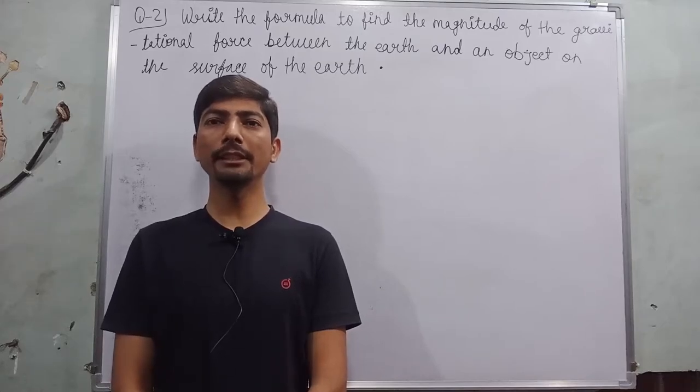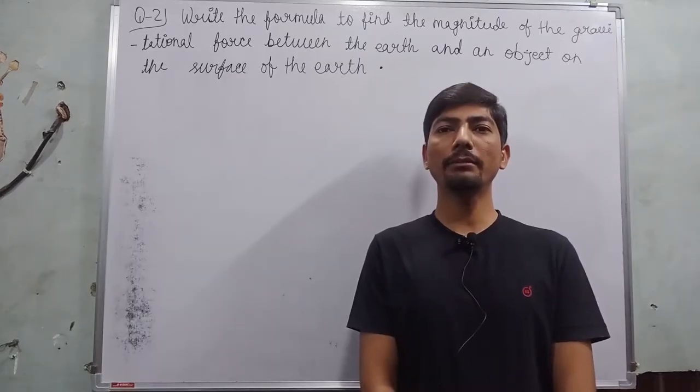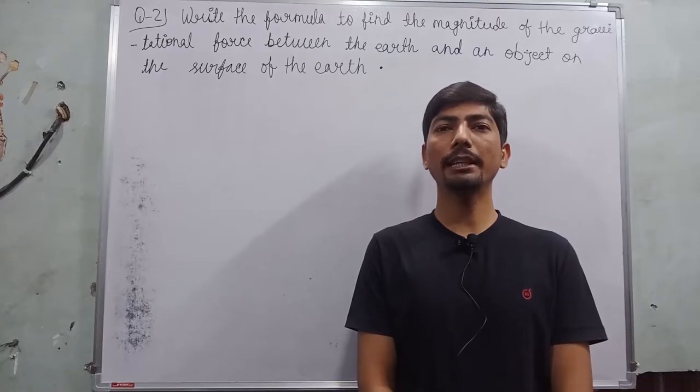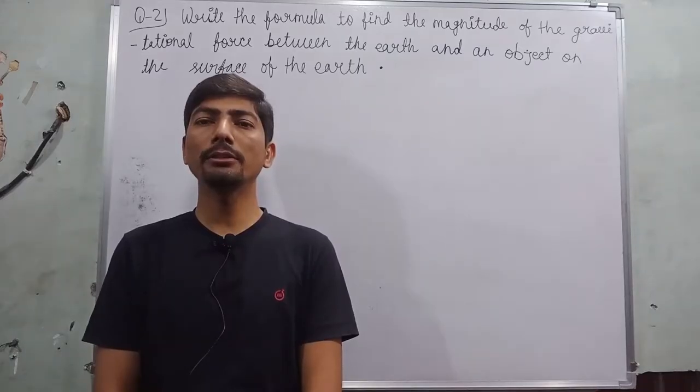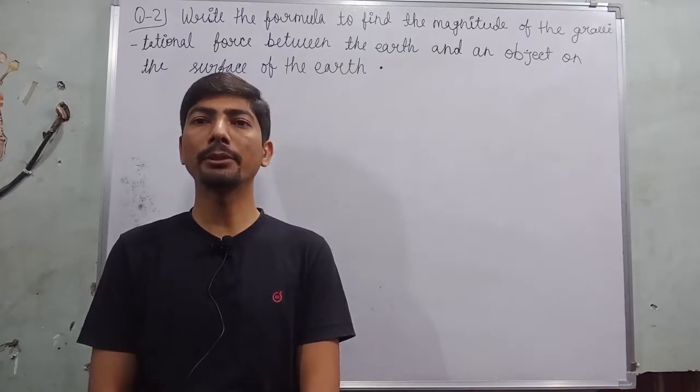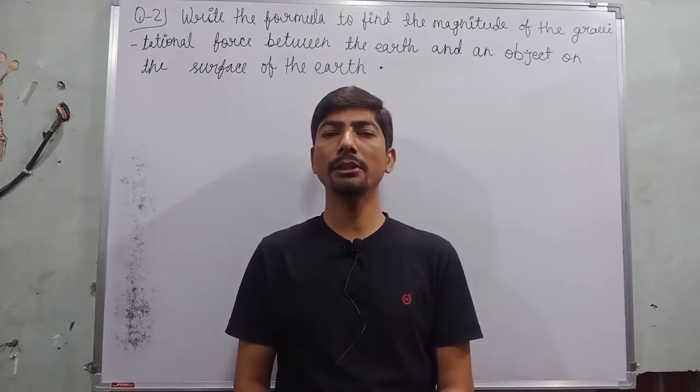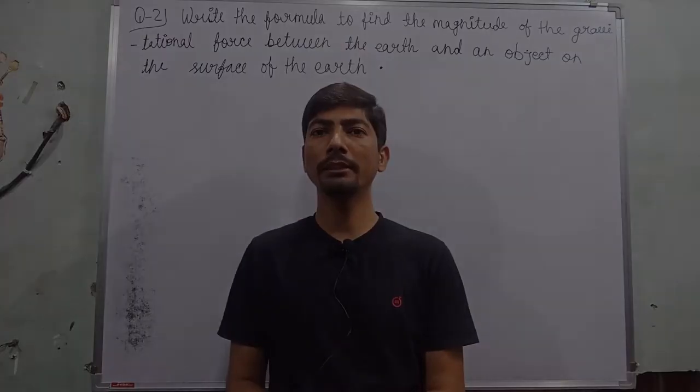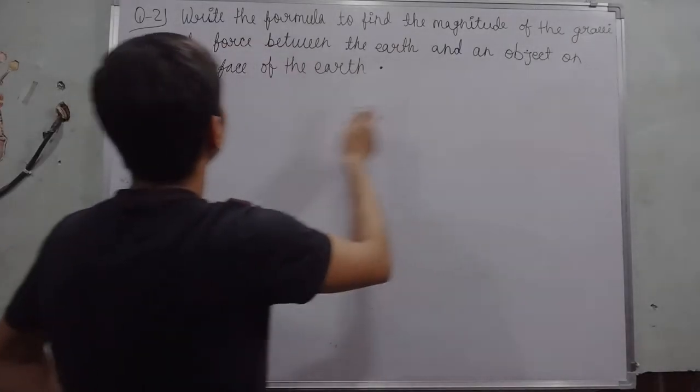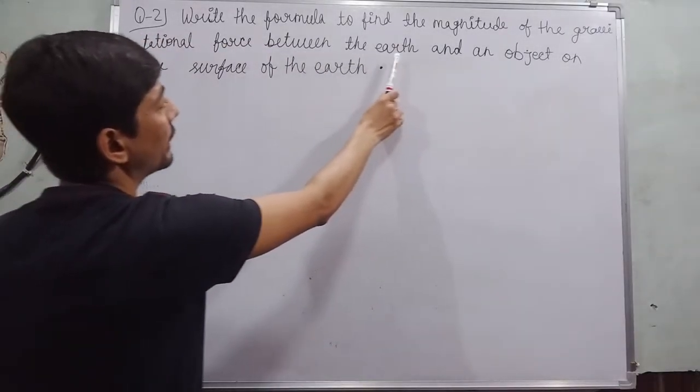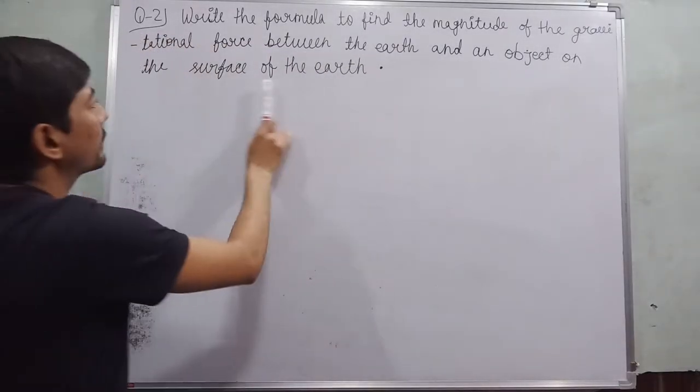Hello students, welcome to Vigyan Chintan. Today I am going to discuss a question from Class 9th Science, Chapter 10, Gravitation. This is Question Number 2, taken from the in-text type questions from page number 134. Before I discuss these questions, I request you to please watch the entire video. So let's start. Write the formula to find the magnitude of the gravitational force between the Earth and an object on the surface of the Earth.